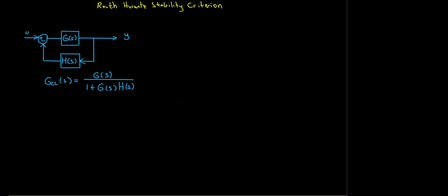If you consider the standard feedback system where we have the forward gain and the feedback gain, we have the closed-loop transfer function as G(s) divided by one plus G(s)H(s). What we're interested in for stability are the pole locations, which are the roots of the characteristic polynomial. If you equate it to zero you have the characteristic equation.